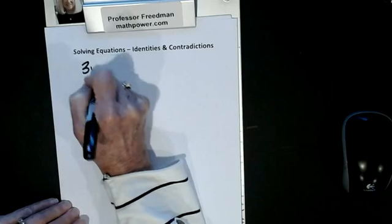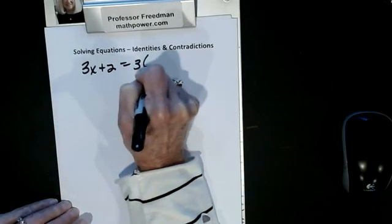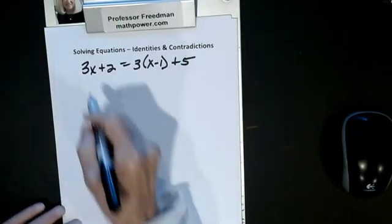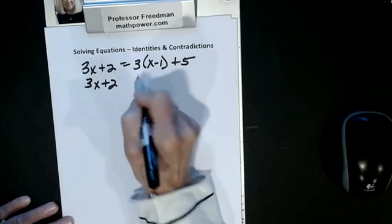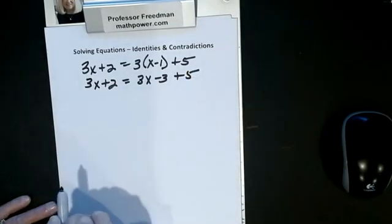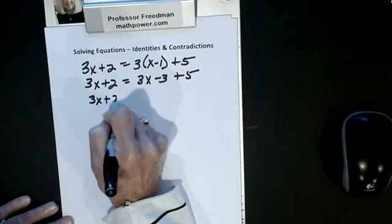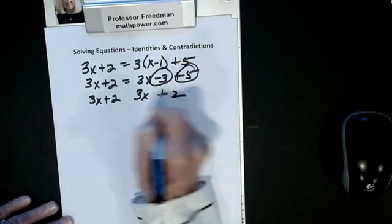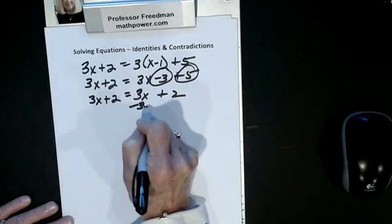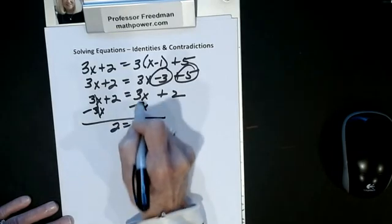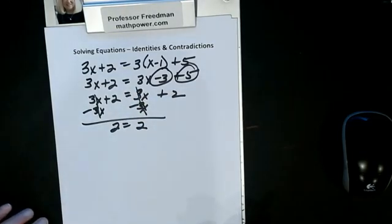Let's do two more. Say I have 3x plus 2 equals 3 times the quantity x minus 1, plus 5. The left side stays as 3x plus 2. Using the distributive property on the right gives 3x minus 3 plus 5, which combines to 3x plus 2. So I have 3x plus 2 equals 3x plus 2. I subtract 3x from both sides — my x's cancel out — and I get 2 equals 2.